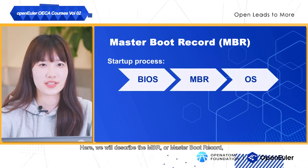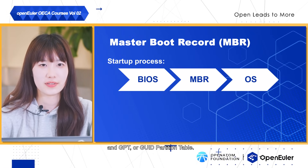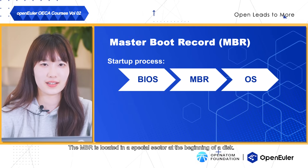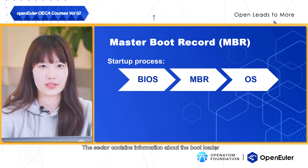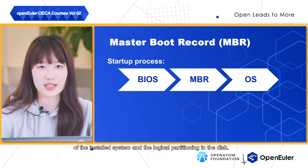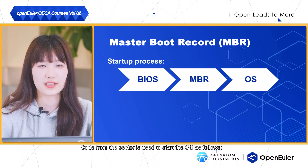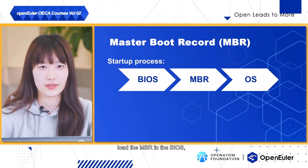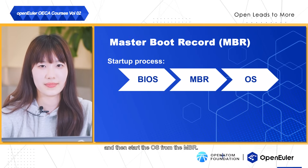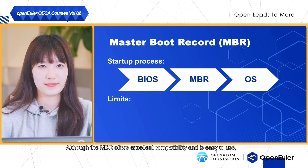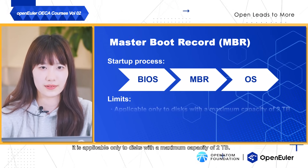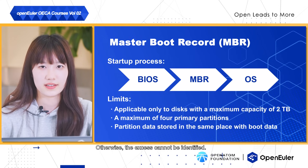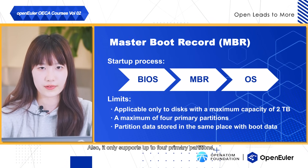There are various disk partitioning schemes. Here, we will describe the MBR or Master Boot Record and GPT or GUID Partition Table. The MBR is located in a special sector at the beginning of the disk. The sector contains information about the bootloader of the installed system and the logical partitioning in the disk. Code from the sector is used to start the OS as follows: start the BIOS of the main board, load the MBR in the BIOS, and then start the OS from the MBR. Although the MBR offers excellent compatibility and is easy to use, it is applicable only to disks with a maximum capacity of 2 TB; otherwise the excess cannot be identified. Also, it only supports up to four primary partitions.